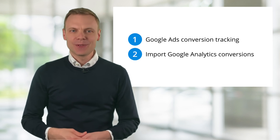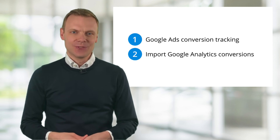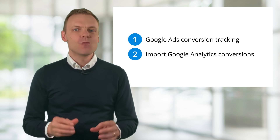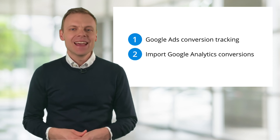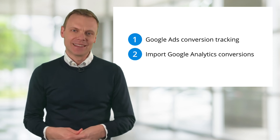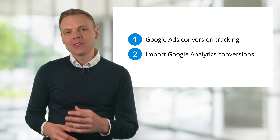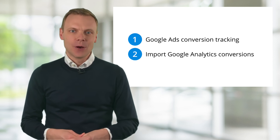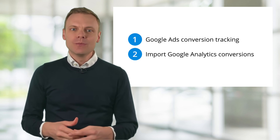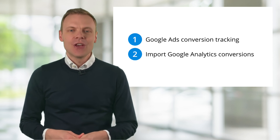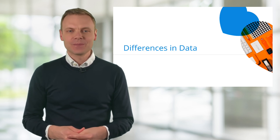When it comes to Google Ads, we have two separate options for tracking conversions. The first option is to use the dedicated Google Ads conversion tracking, which is configured 100% focused on the performance of our Google Ads campaigns. The second option is to import conversions from Google Analytics — we configure the conversion inside Google Analytics and then import them back into Google Ads. Having both options gives us the flexibility to choose what works for our particular tracking needs.